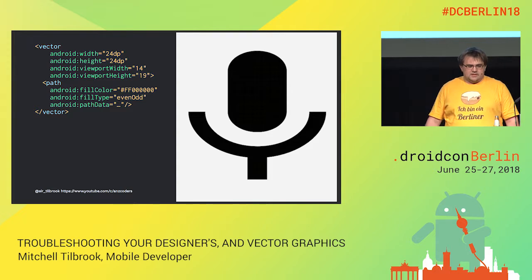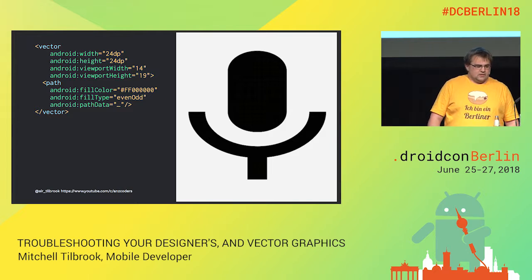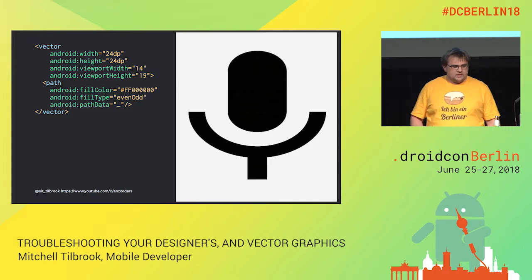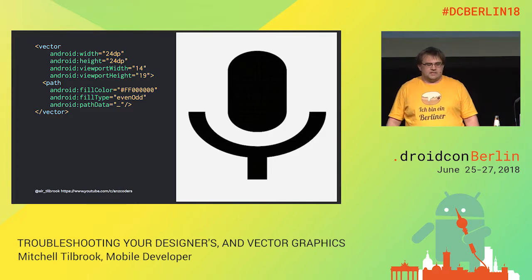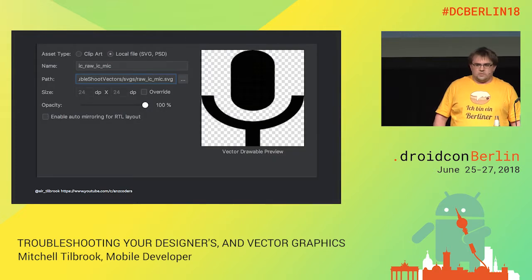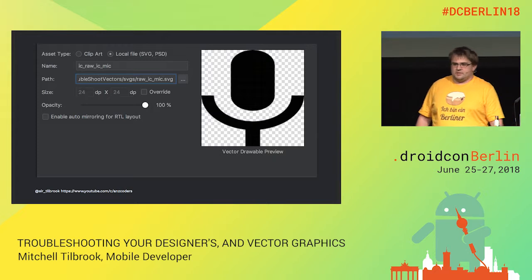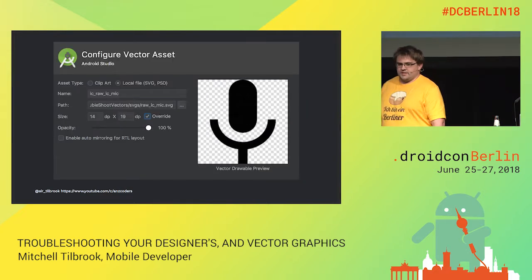So why is the width and height we've imported into Android Studio 24 by 24? There's one thing that we can do here, and that is to override what Android Studio is importing. This is pretty simple — we just click the little box that says override. And once we've done that, our width and height becomes the same and our viewport becomes the same.